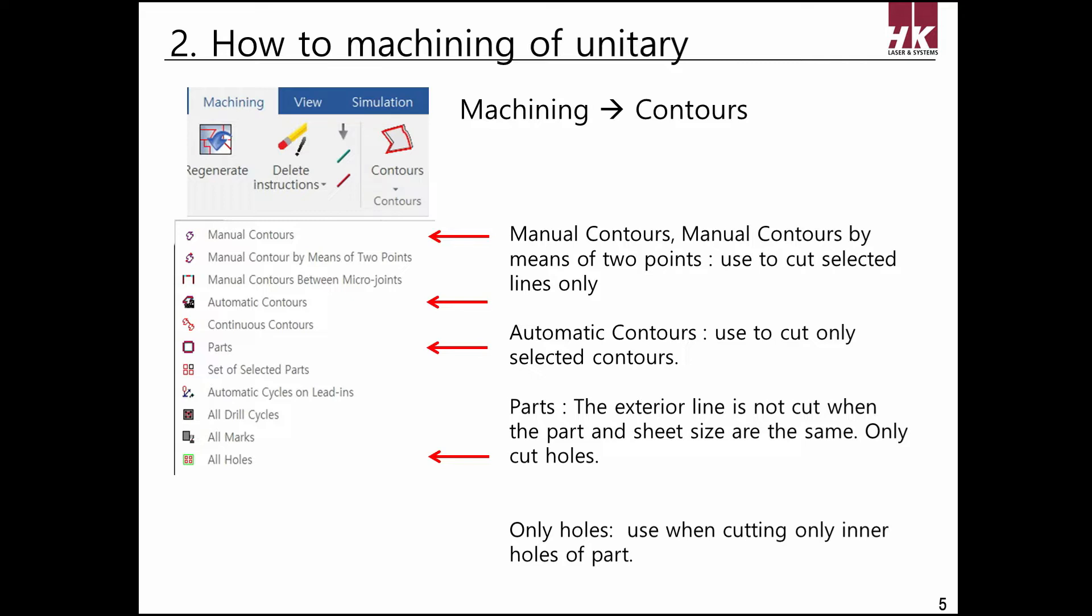First, let's find out Manual Contours and Manual Contours by means of two points. Manual Contours is the way to cut line which is used to cut some contours apart. The difference between Manual Contours and Manual Contours by means of two points is lead-in.